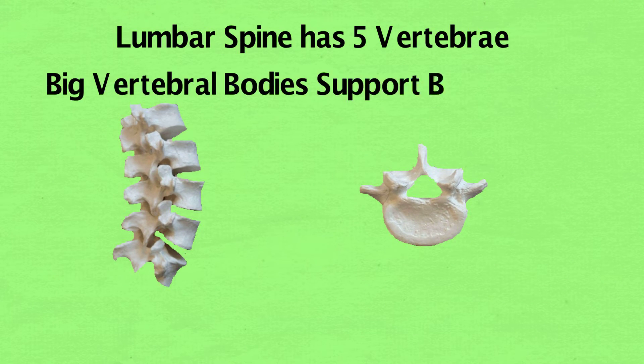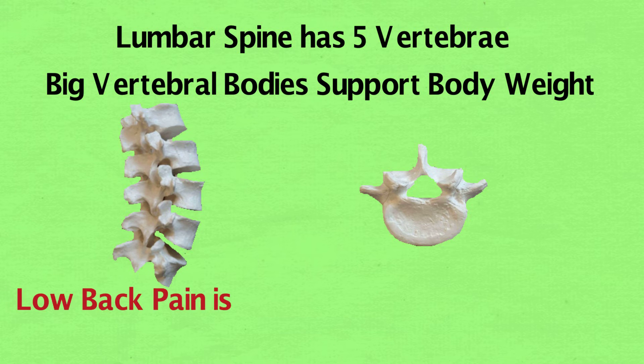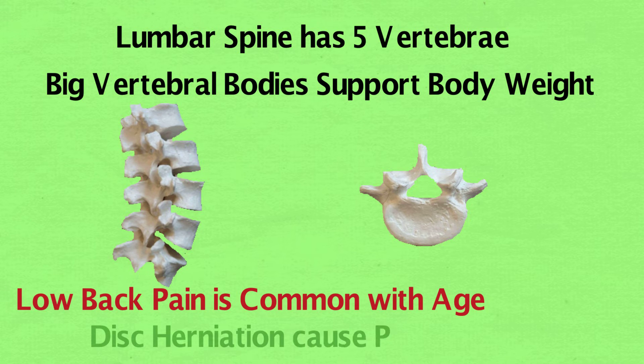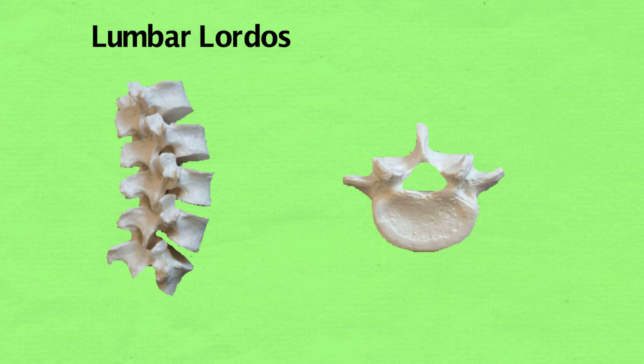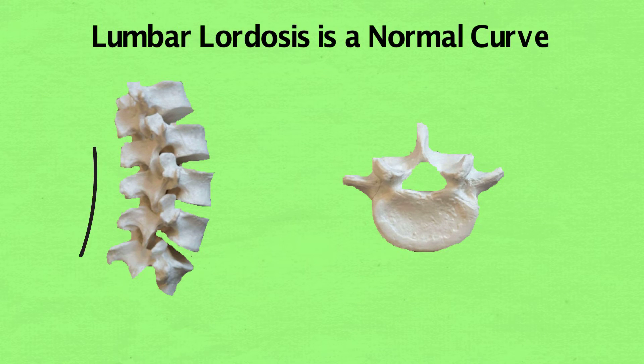Lumbar spine has 5 vertebrae — big vertebrae, big vertebrae, support body weight. Low back pain is common with age. Disc herniation causes pain down the leg. Lumbar lordosis is a normal curve.